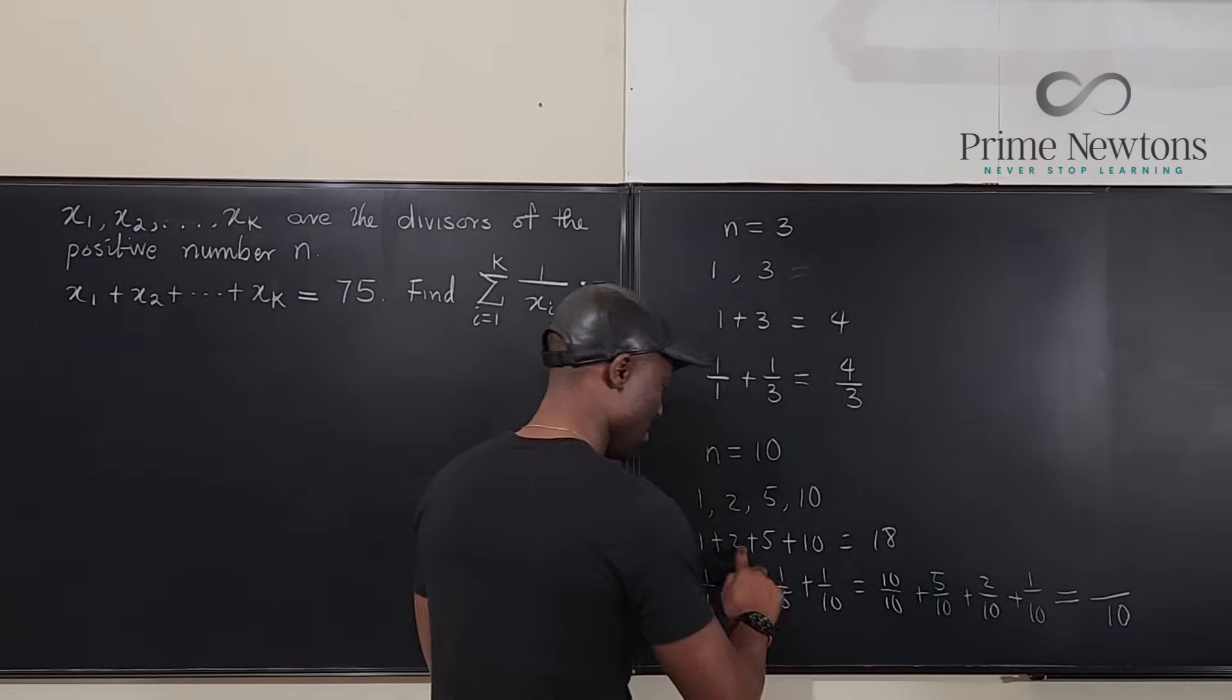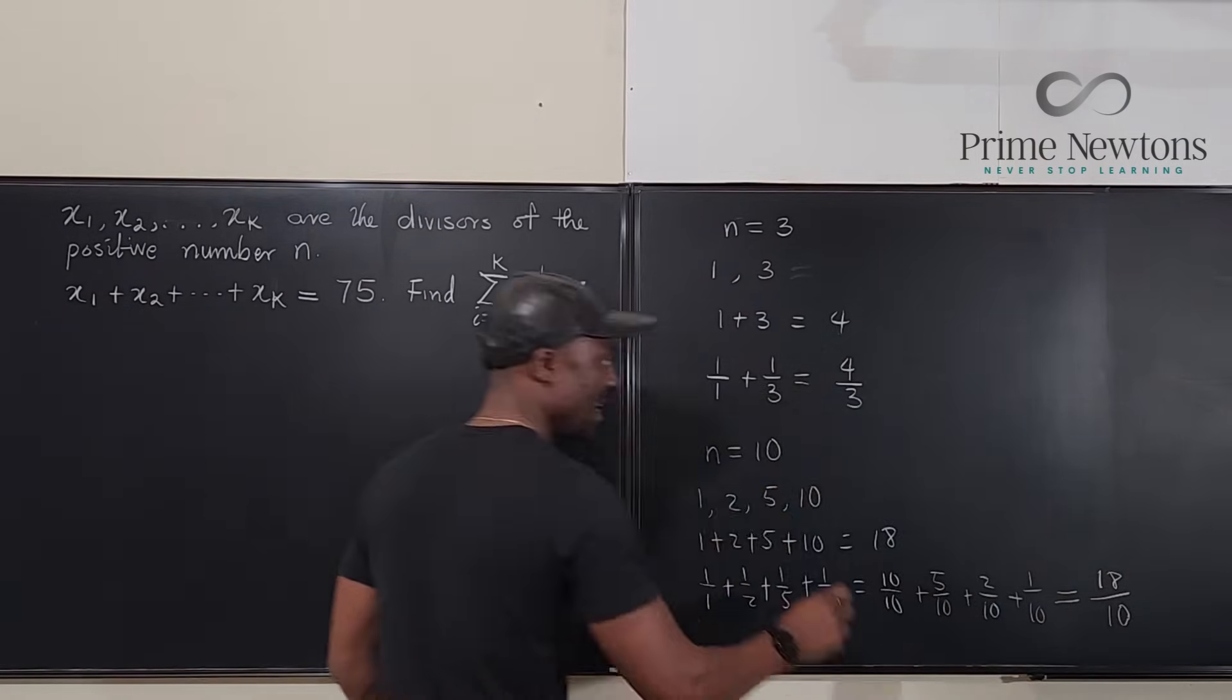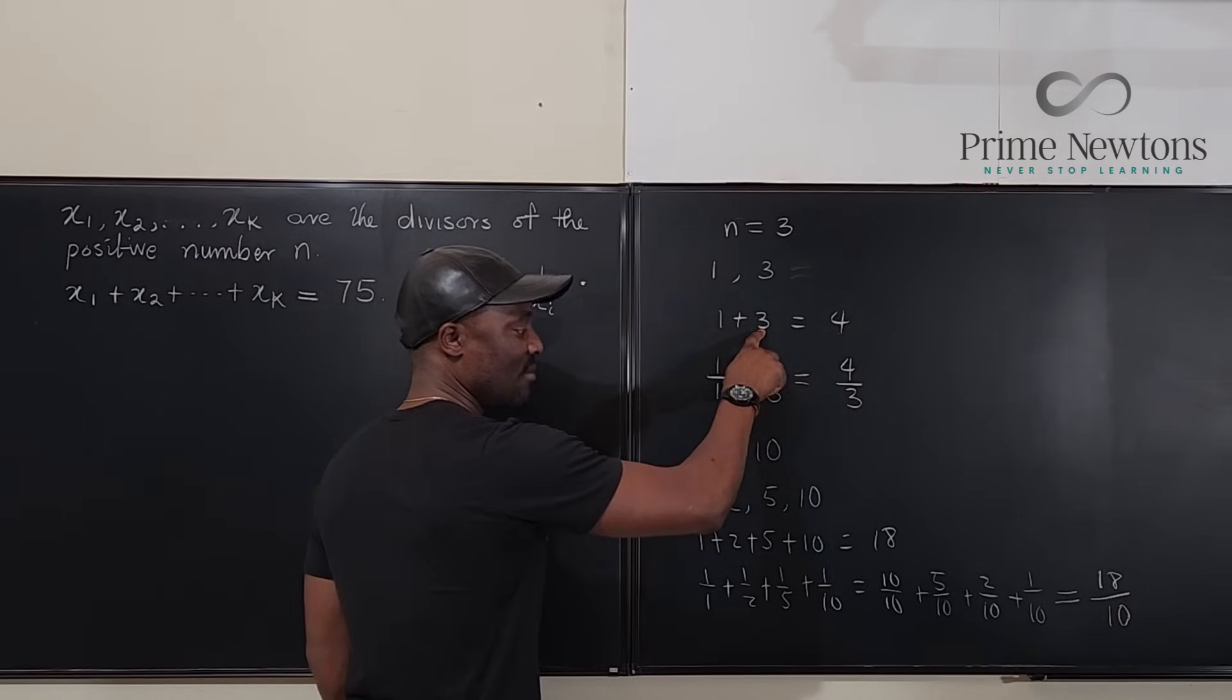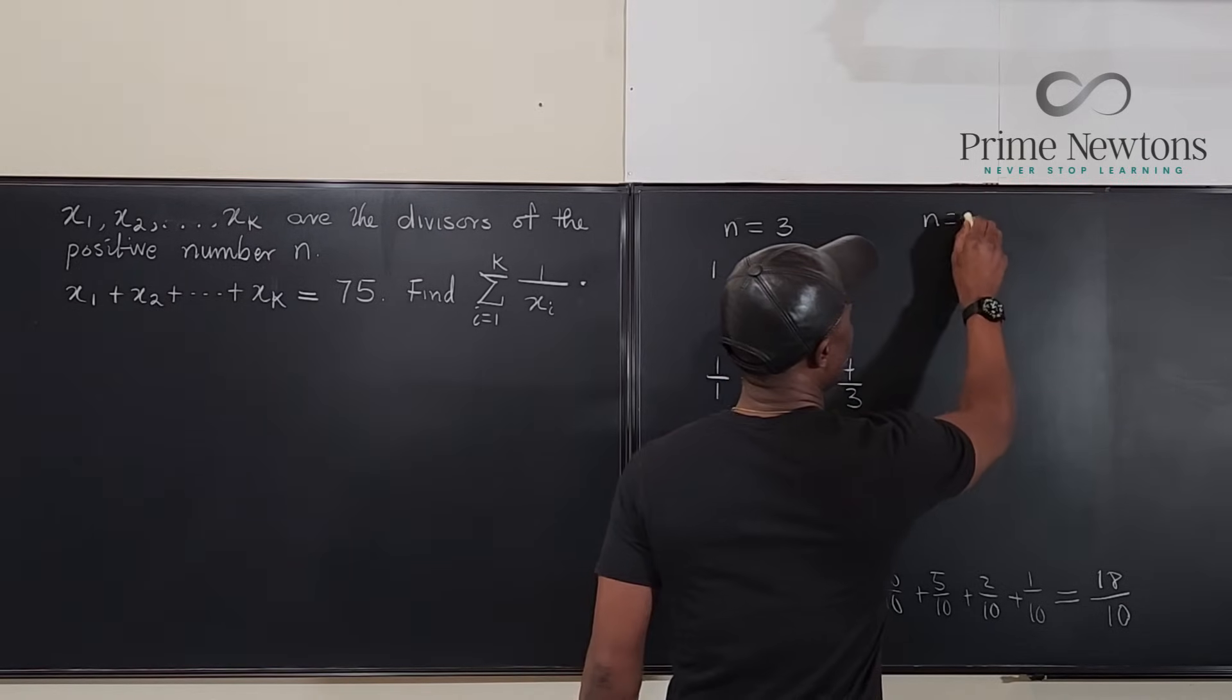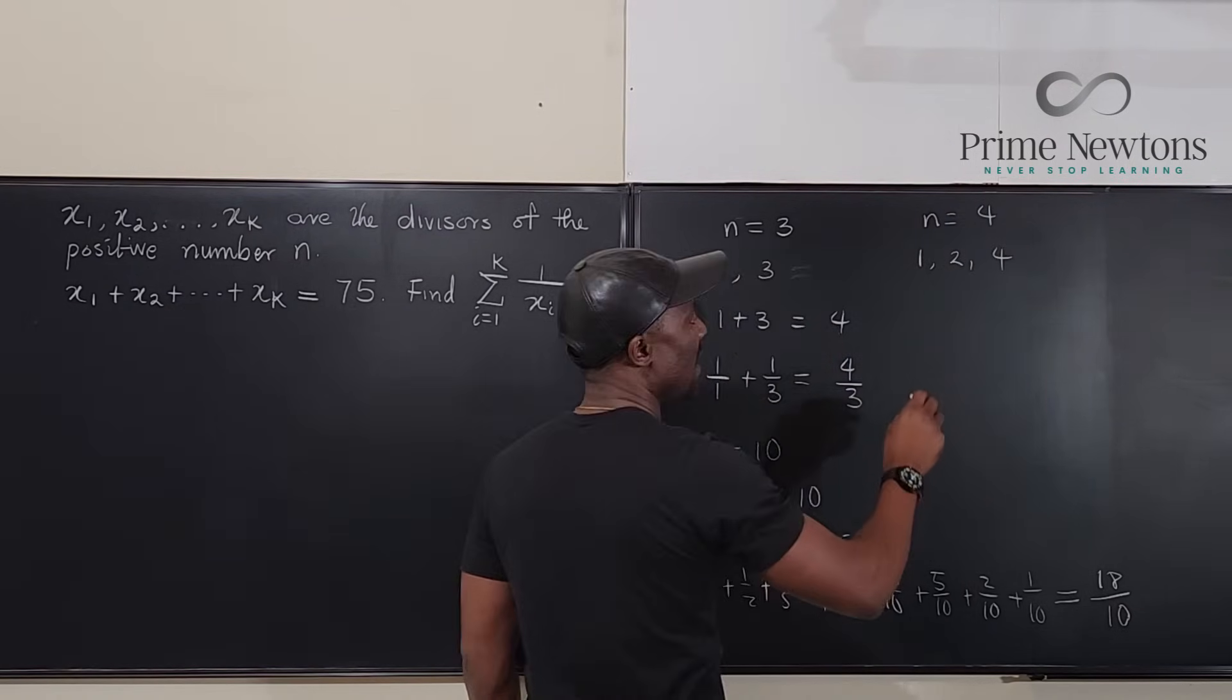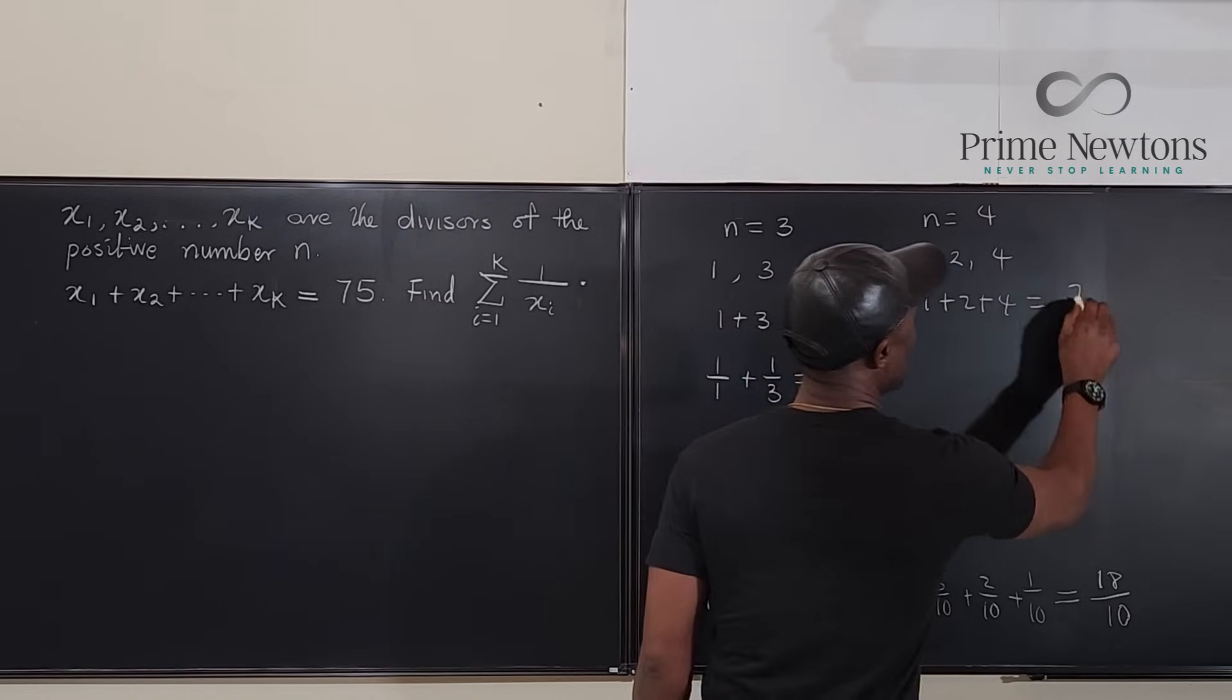So, this is going to be 1 plus 2 plus 5 plus 10. If you add up all the top, it's going to be 18. Again, it's similar to this. It is that sum divided by the number. It is that sum divided by the number. So, if n equals 4, the factors are 1, 2, and 4. So, that you're going to have 1 plus 2 plus 4 equals 7.